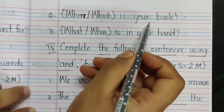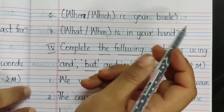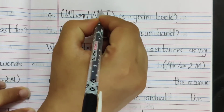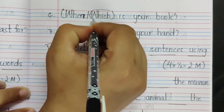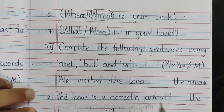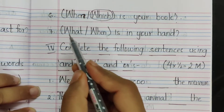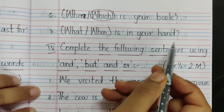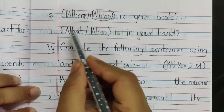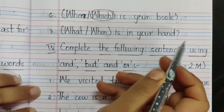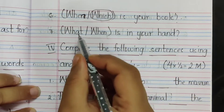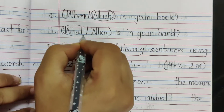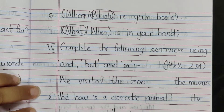Next: 'When or which is your book?' 'When is your book?' — No. 'Which is your book?' — Yes. Circle the word 'which.' Then: 'What or when is in your hand?' 'What is in your hand or when is in your hand?' — 'What is in your hand.' Circle the word 'what.'